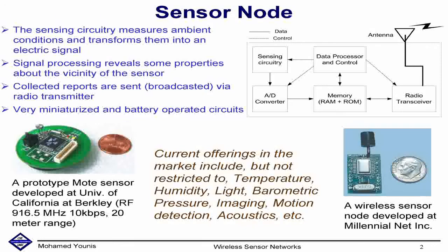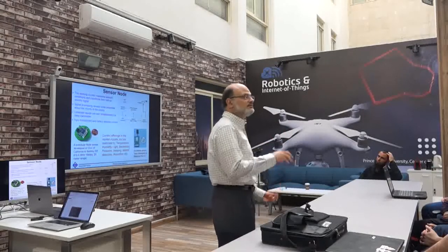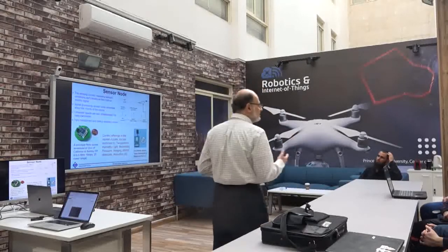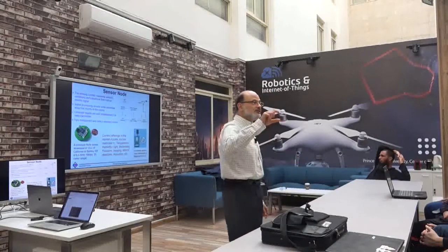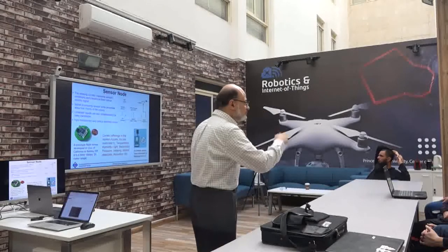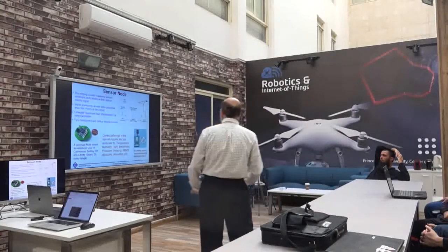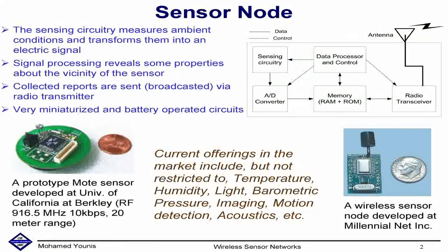Let me back up. A sensor is a device that probes the environment. A sensor node is a circuit that involves a sensor and some processing and some communication. You cannot call it a node without having communication, because having the capability of sensing, processing, and communication is what really made the difference. So a sensor node will typically involve sensing circuitry — the part that gets the ambient condition and probes the environment — and some data processing and control engine.